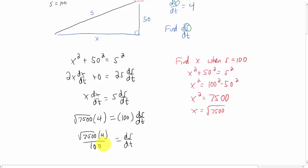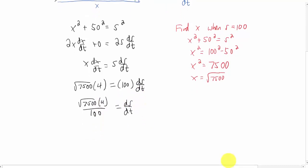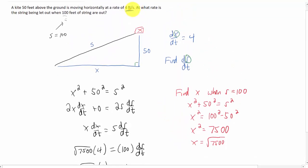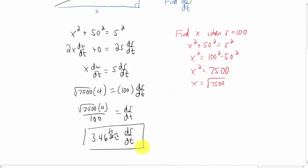Divide both sides of the equation by 100 and I'm going to plug that into my calculator. And I'm getting that ds/dt is approximately 3.46. Let me see what our units are on this again. We're talking about feet per second. And that is it.